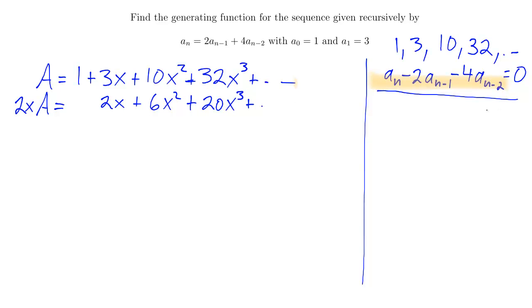Now I also want to take away 4 of the term before that, so I'll multiply the sequence by 4 and an x squared. That'll move everything over two spots, giving me the a_{n-2} terms. The 1 becomes a 4x squared, the 3x becomes a 12x cubed, and I would keep going as far as I needed. In this case that's all I need.